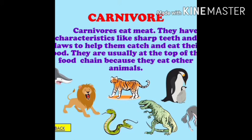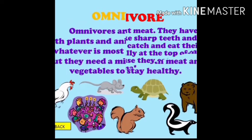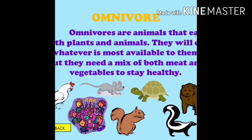Herbivorous animals have strong and long teeth, while carnivores have sharp teeth and claws. Omnivorous animals have the qualities of both herbivorous and carnivorous animals.